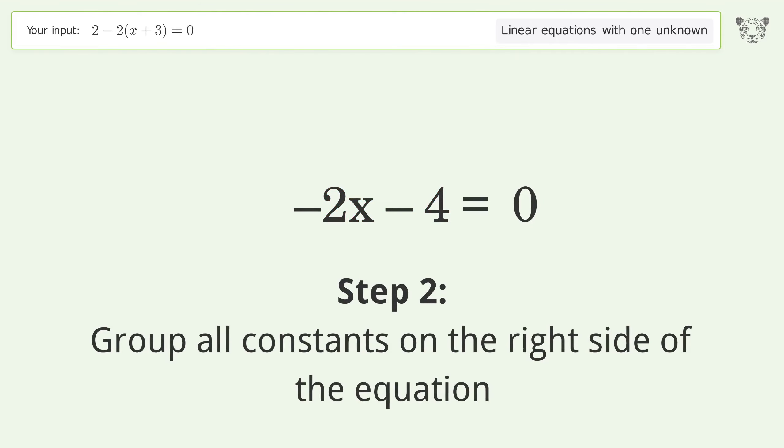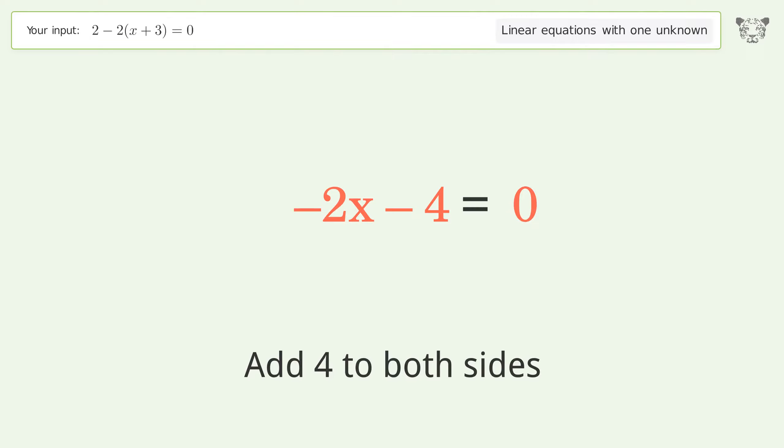Group all constants on the right side of the equation. Add 4 to both sides. Simplify the arithmetic.